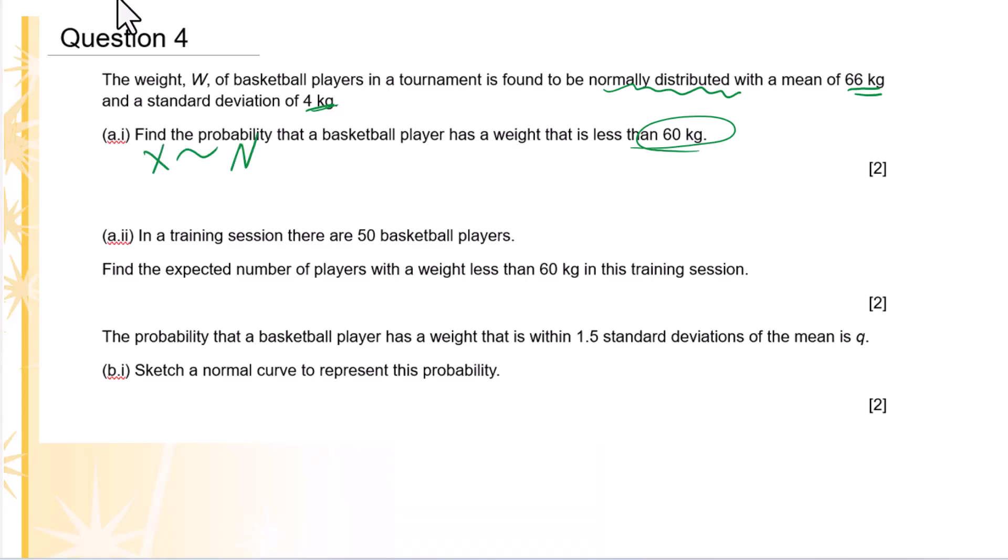X follows a normal distribution with mean 66 and standard deviation 4. We are looking for probability of X less than 60. Since for normal distribution it's continuous data, X less than 60 means X less than or equal to 60. Do not be confused with the binomial distribution.